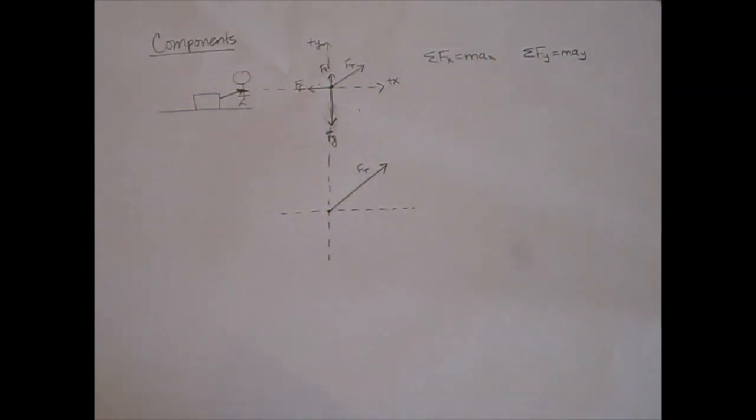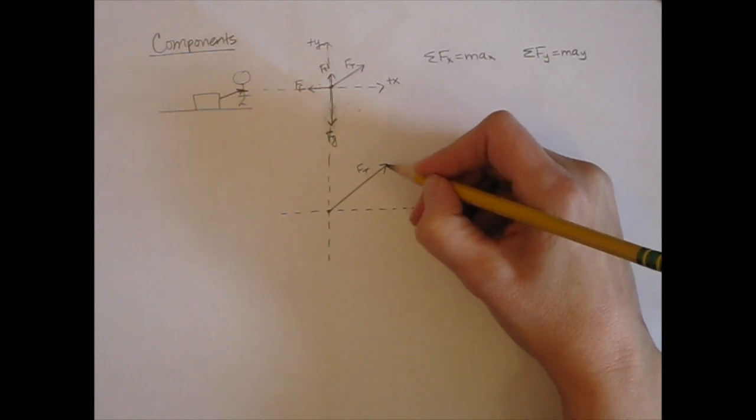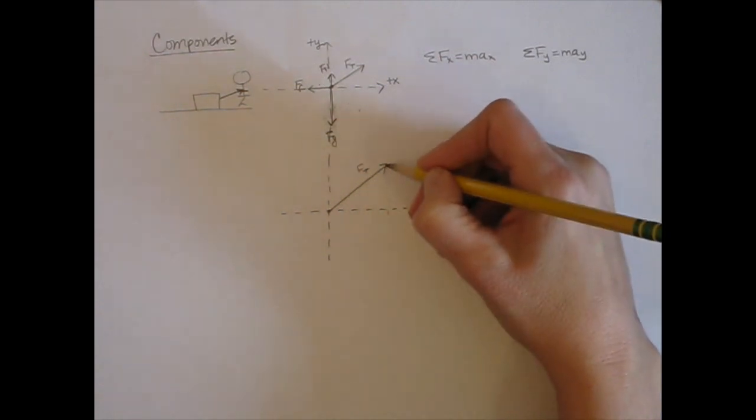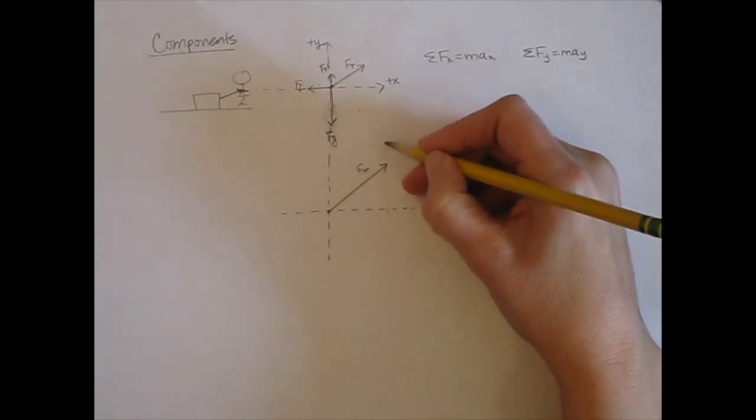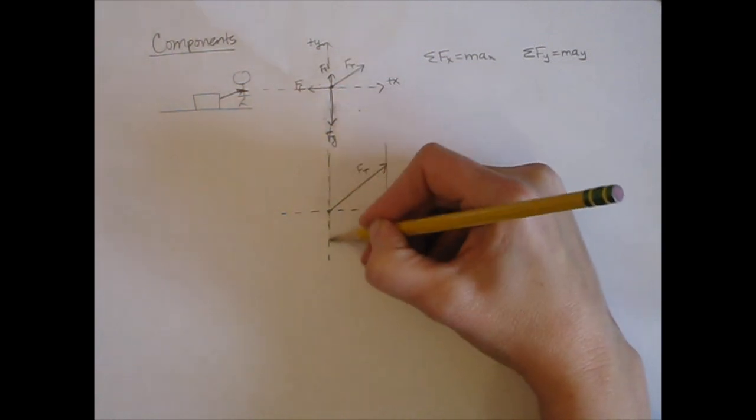In order to find the components you need to, from this point, project down to the x axis. And one way to think about doing this is that you're drawing sort of a line here that is parallel to your y axis.